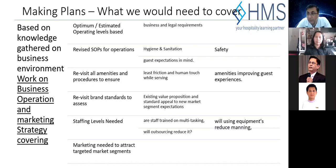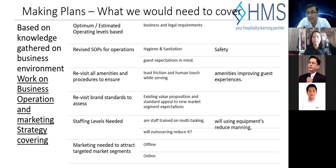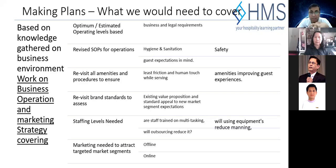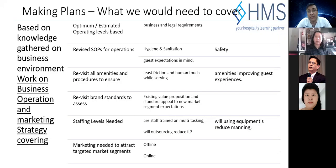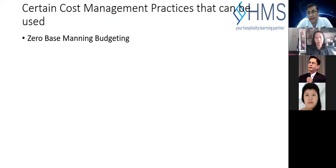Cash management doesn't mean you're going to cut everything or not spend anything. It depends on what your most impactful expense is — spend money where it can affect you the most, either generating more revenue or reducing operational costs. Even if you need to buy new equipment, that doesn't contradict cost management. Some cost management practices you can apply now include zero-base manning — assessing whether you really need all the staff at all positions for different occupancy levels. If you have five rooms or ten rooms a day, how many people do you realistically need to meet your service standards?